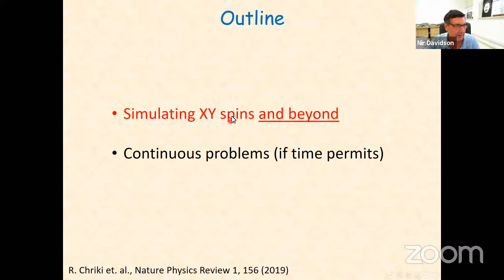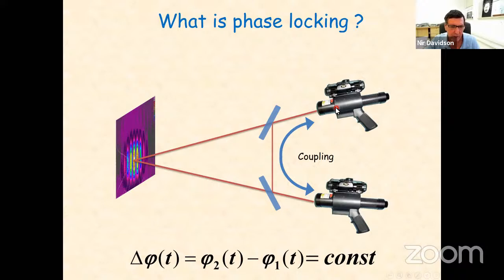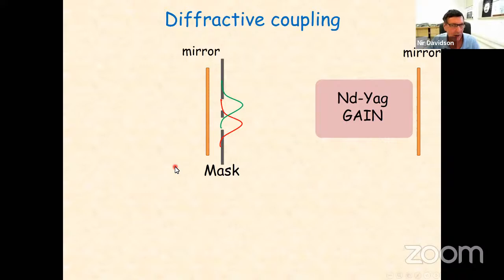I'm going to show you how we can simulate XY spins and via them solve problems. Then I will show that in many cases the mapping between the lasers and the XY spins is not full — not complete — so you can go beyond XY. To start simply: if you take two lasers and interfere them on a screen, you normally won't see fringes because of relative phase fluctuations. But if you couple them dissipatively, you can get a constant phase shift, and even though each phase still fluctuates, the relative phase can stay constant throughout the day, giving stable interference fringes. This is our goal.